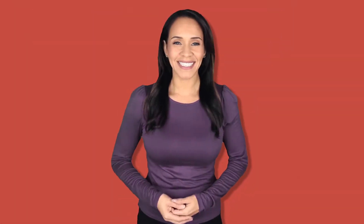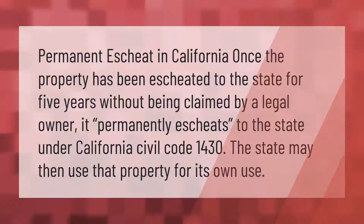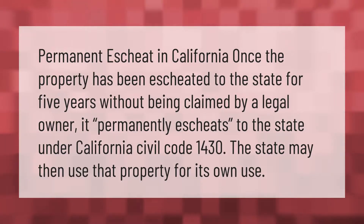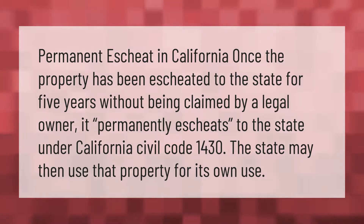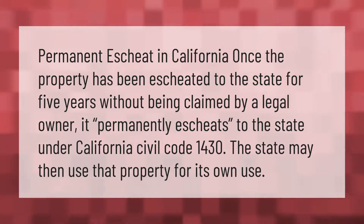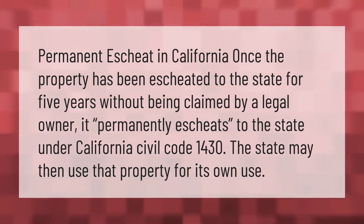In California, once the property has been escheated to the state for five years without being claimed by a legal owner, it permanently escheats to the state under California Civil Code 1430. The state may then use that property for its own use.